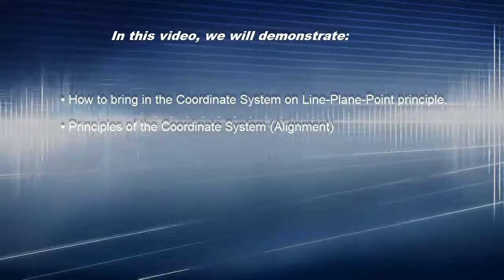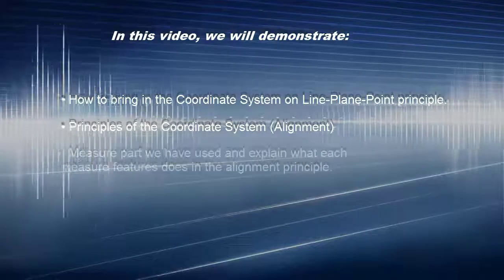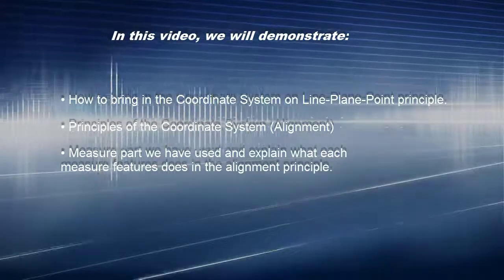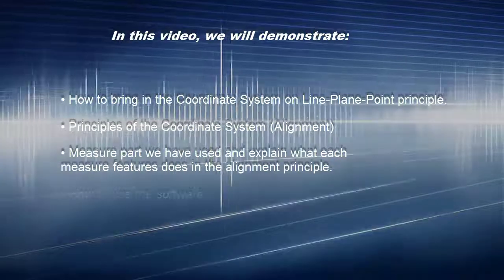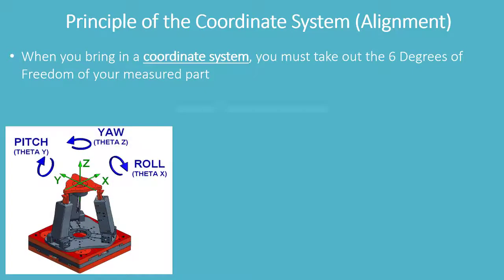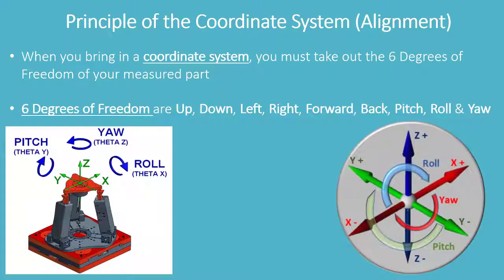Principles of the Coordinate System Alignment. We will measure the part and explain what each measured feature does in the alignment principle and how to use the software. When you bring in a coordinate system, you must take out the 6 degrees of freedom of your measured part. The 6 degrees of freedom are: up, down, left, right, forward, back, pitch, roll, and yaw.